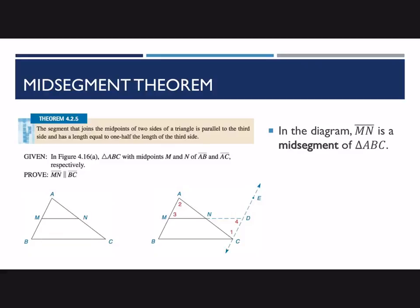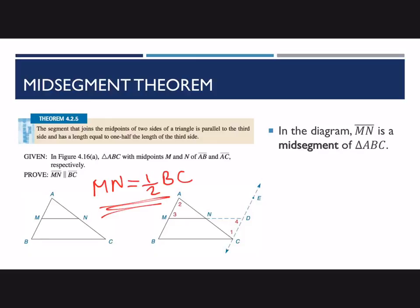Here's the mid-segment theorem: the segment that joins the midpoints of two sides of a triangle is parallel to the third side, and has a length equal to one half the length of the third side. In the given figure, we have triangle ABC, and we assume M and N are midpoints of AB and AC respectively. The first part of this proof shows that MN is parallel to BC, and the second part shows that MN equals half the length of BC. The second part is left as an exercise.